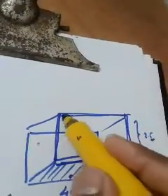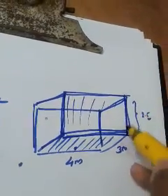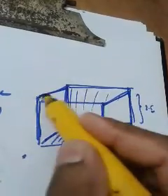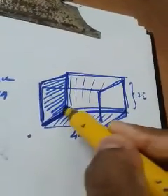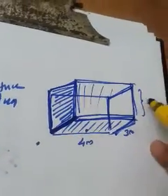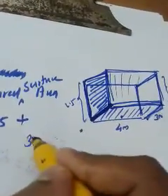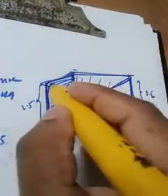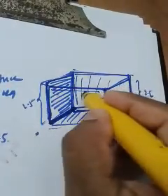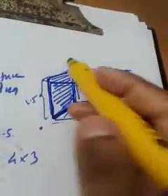After covering front and back, she has to cover the two side faces. For the side face, the length is 3 meters and the breadth is the height 2.5 meters, so area is 3 into 2.5. Multiply by 2 since both side faces are the same. Then for the upper portion (top), it is a rectangle with length 4 meters and breadth 3 meters, giving 4 into 3. No need to multiply by 2 because the lower base is not included.